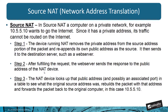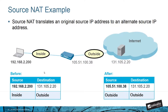After fulfilling the request, the web server sends the response to the public address of the NAT device. The NAT device looks up that public address, and possibly an associated port, in a table to see what the original source address was, rebuilds the packet with that address, and forwards the packet to the original computer — in this case, 10.5.5.10.